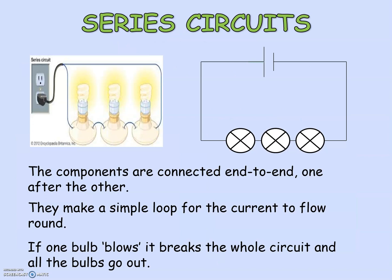In a series circuit all the components are connected end to end, one after another — just like if you were watching a TV series, you watch them one after another. This makes a simple loop for current to flow. Here is an annotated circuit diagram using the symbols — these are your three bulbs, and you will see there is a power supply here to annotate the circuit you're seeing in this picture.